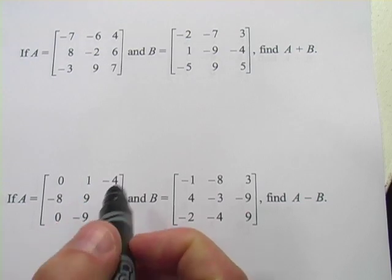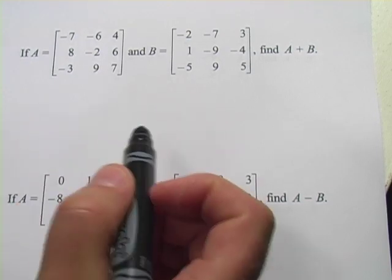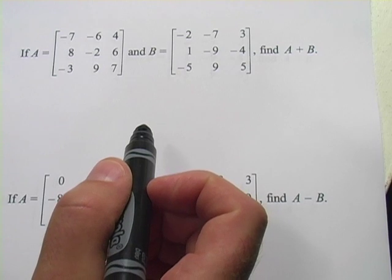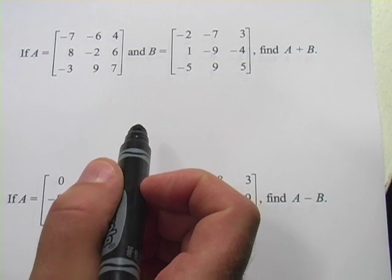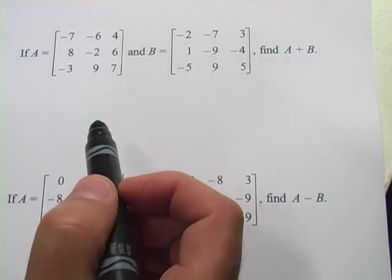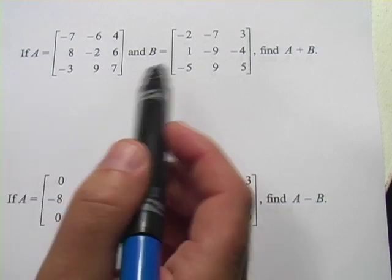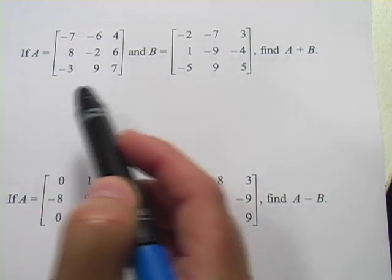In these problems, we are adding and subtracting with 3 by 3 matrices. And this really isn't any more difficult than what you've done before. The matrices are just a little bigger. And remember, when you add matrices, you're going to add the elements that are in the same place.